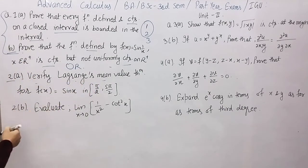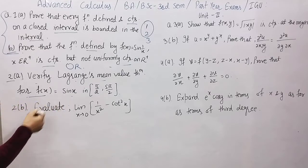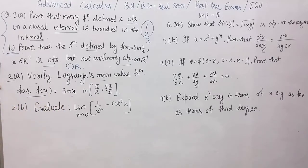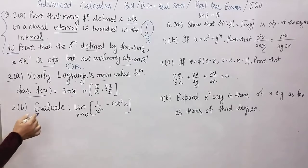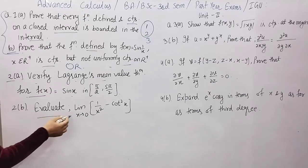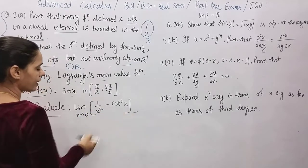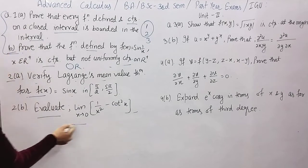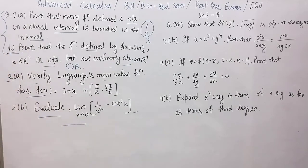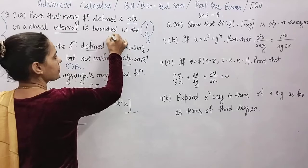Verify by the Mean Value Theorem for f(x) = sin x — this is from the second chapter, Derivatives and Mean Value Theorem. Then evaluate the limit as x tends to 0 of (1/x² − cot²x) — this is an indeterminate form question. So one question here is from the first chapter.